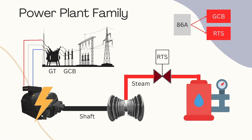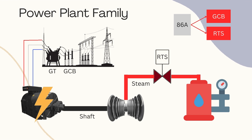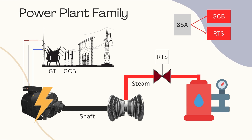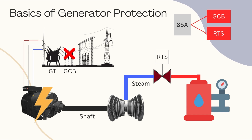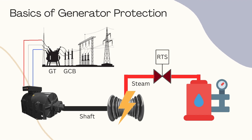If a fault occurs in the generator, the Class A relay will act, sending a trip command to the GCB and the Remote Trip Solenoid (RTS), through which steam passes from the boiler to the turbine. By isolating the generator from the grid and stopping the steam flow to the turbine, the rotor of the generator will slow down.